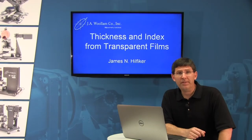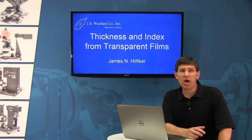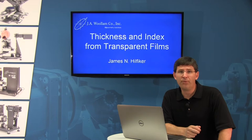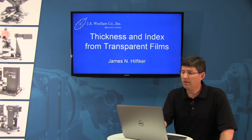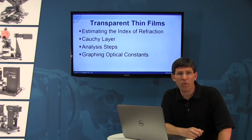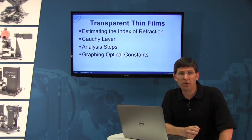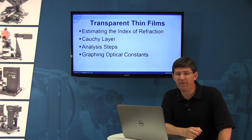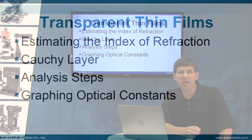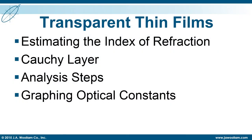Welcome back. In this session, we're going to talk about how to determine both film thickness and refractive index for your transparent films. First, we'll have to estimate what is the index of refraction. We're going to use the Cauchy layer to describe the index versus wavelength. I'll show you all of the analysis steps and finally how you can graph your optical constants.